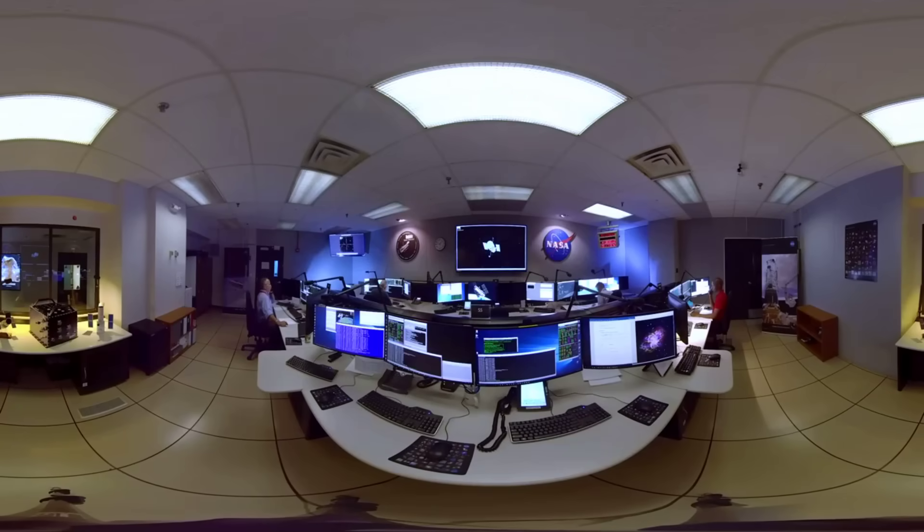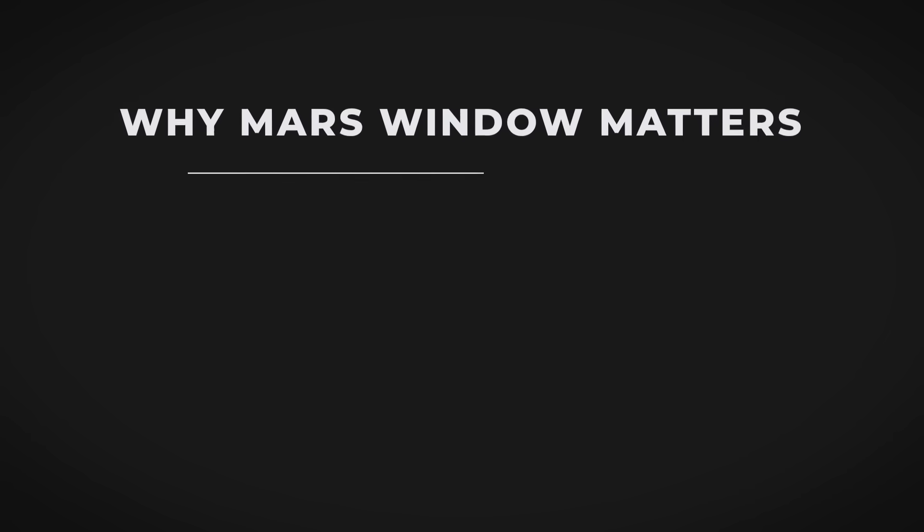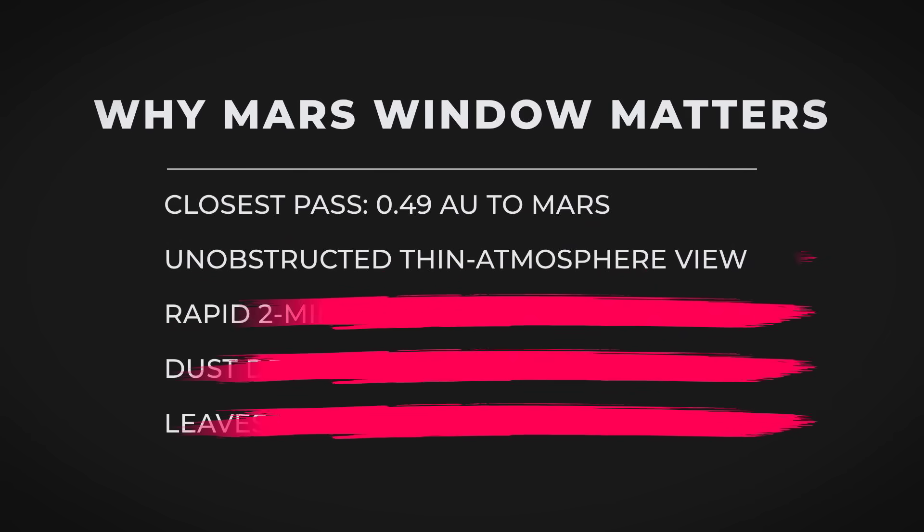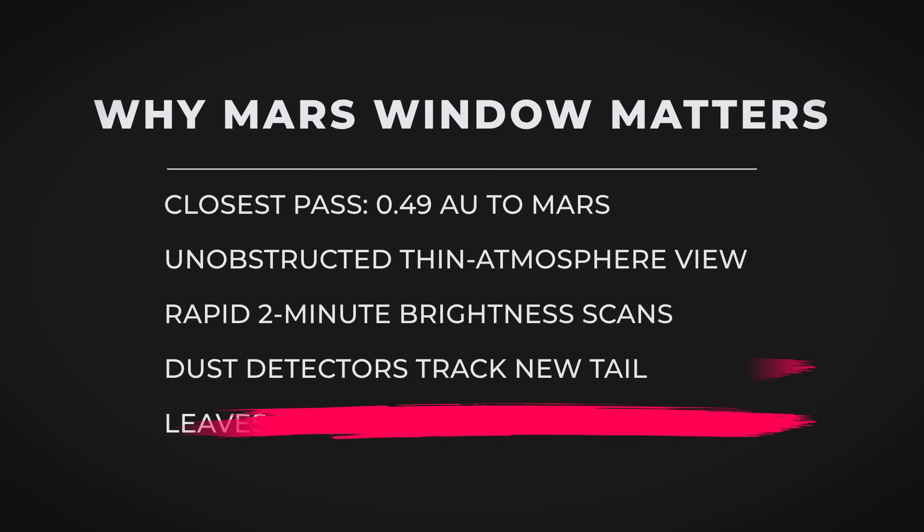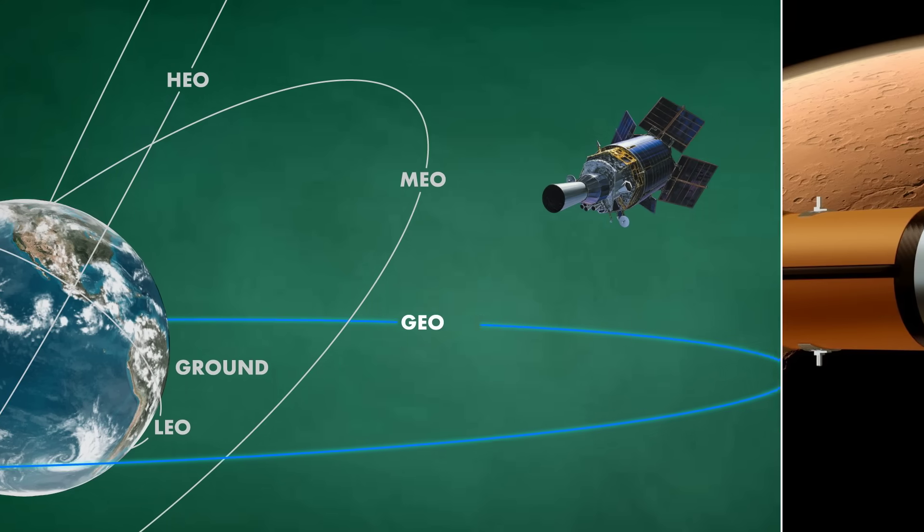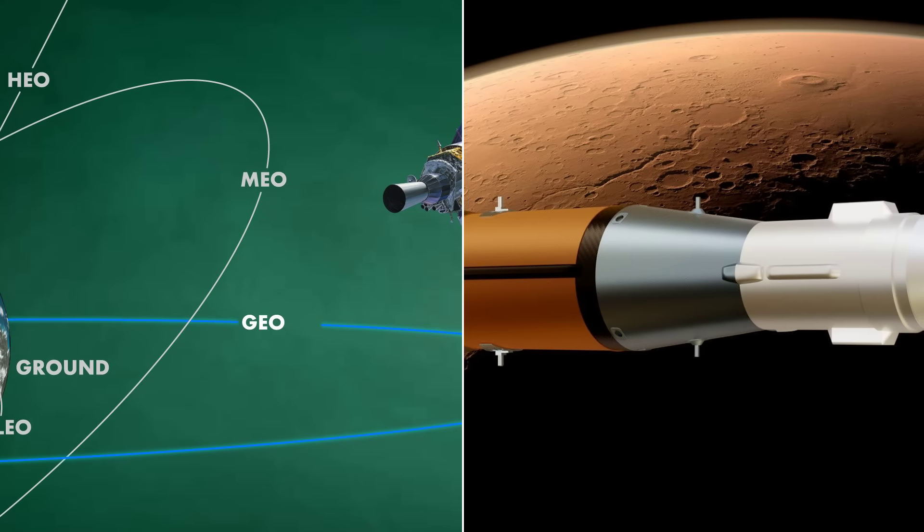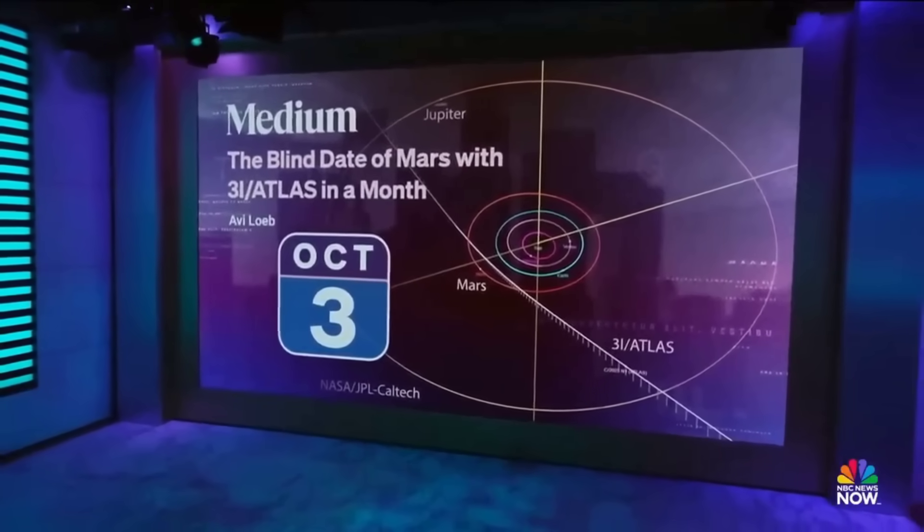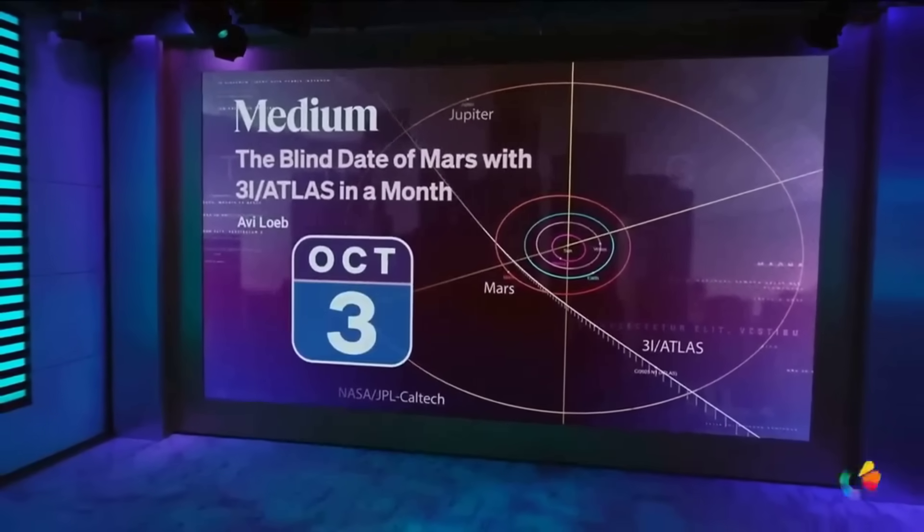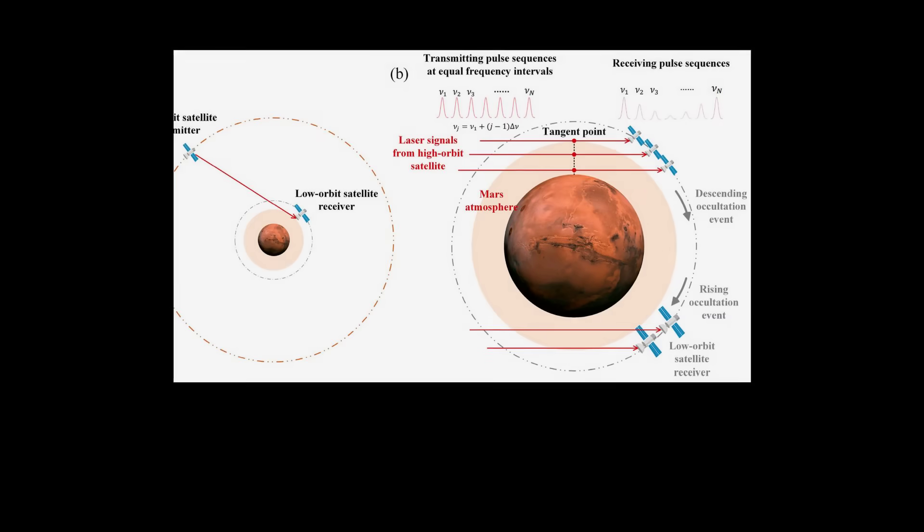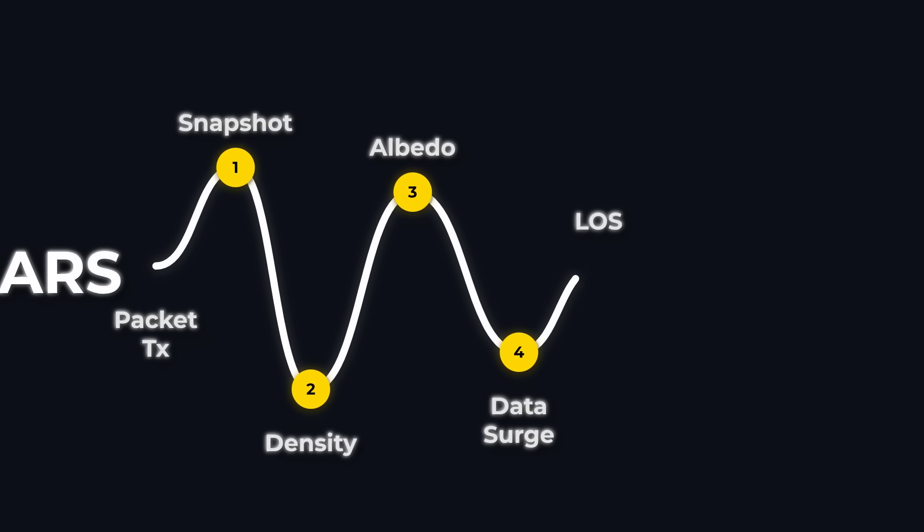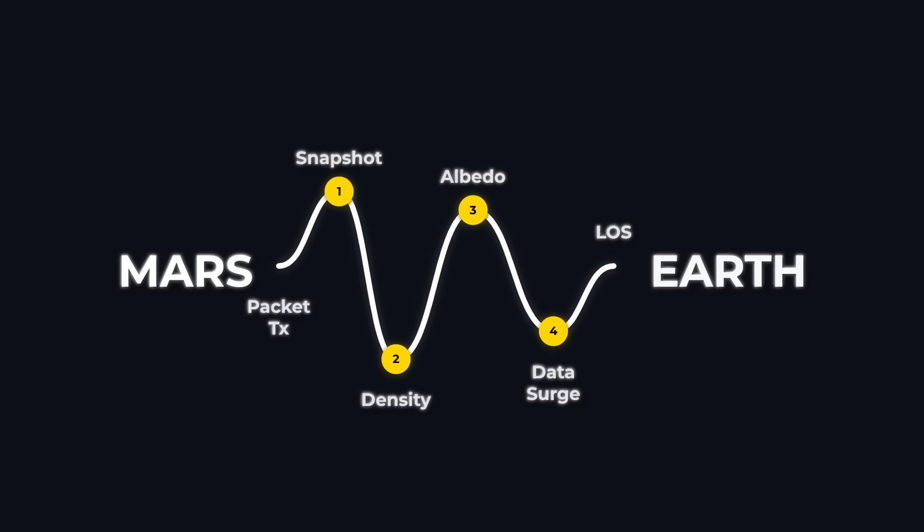Still, the attempt matters. Every instrument trained on 3I/ATLAS during this window could catch a change in brightness, a sudden outburst, or the first hints of a developing tail. Mars' unique vantage point offers something Earth can't. A clear, uninterrupted view when the object is lost to the sun's glare from our perspective. For a few days, the red planet becomes the solar system's watchtower, and every data packet sent back could be the key to understanding what this wanderer is made of.